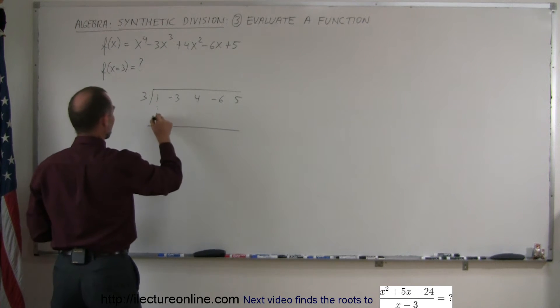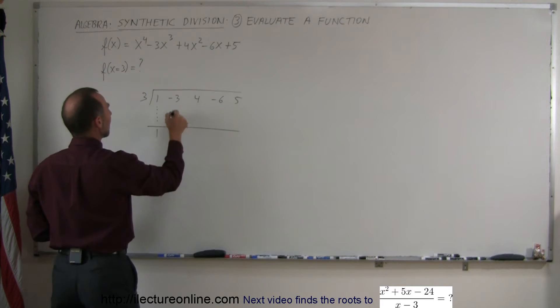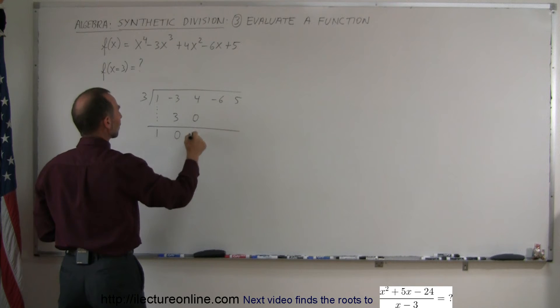First, drop this number down here. 1 times 3 is 3. Add them together, you get 0. 0 times 3 is 0. Add them together, you get 4.